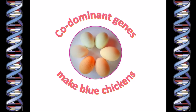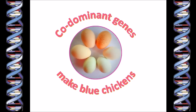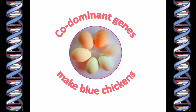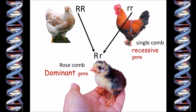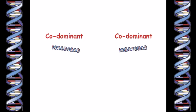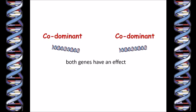In my first introduction to chicken genetics, I showed how one gene could be dominant over its alternate recessive gene, like the rose comb gene is dominant and the gene for single comb is recessive. But not all genes are either dominant or recessive. Some genes can be co-dominant, meaning they can both be expressed even when present in only one copy.